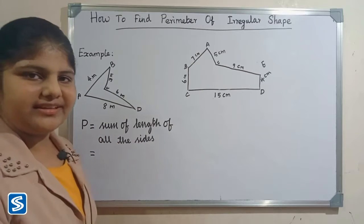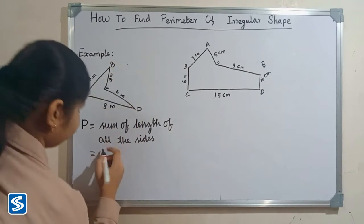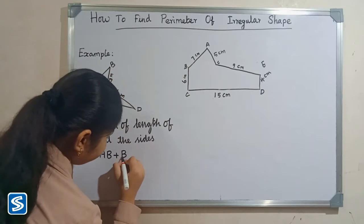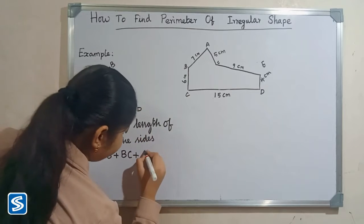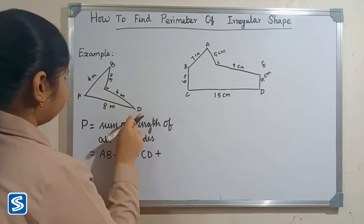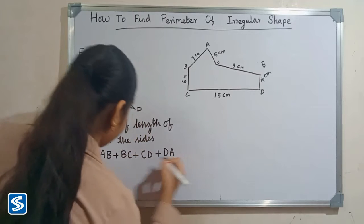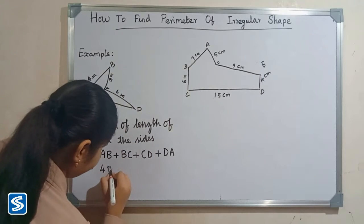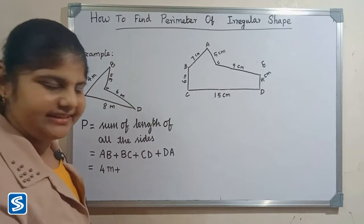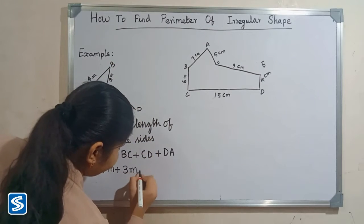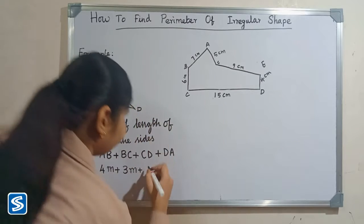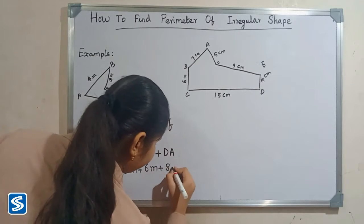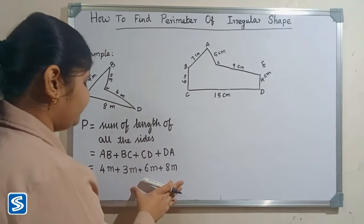Here the sides are AB plus BC plus CD plus DA. AB is 4 meters, plus BC is 3 meters, plus CD is 6 meters, plus DA is 8 meters. So now we have to add all the lengths of the sides.